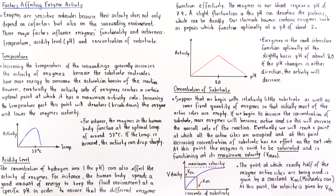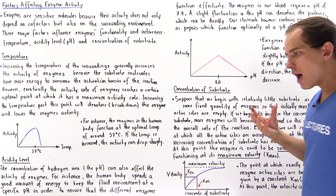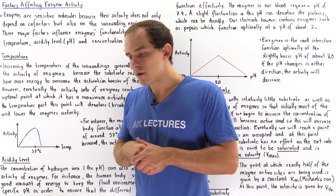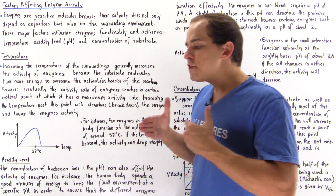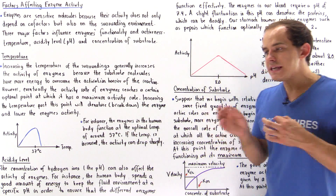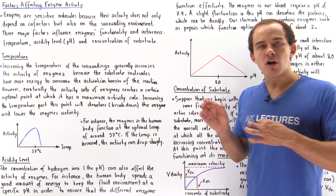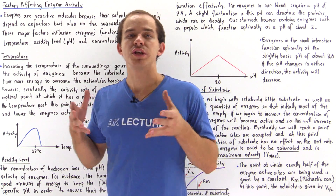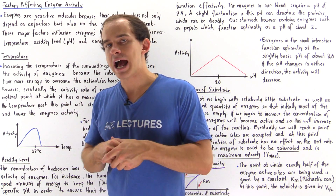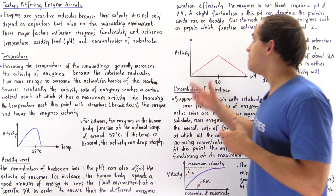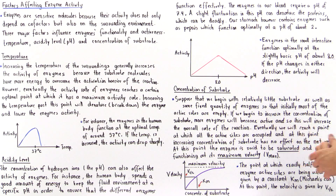The enzymes in our blood, for example, require a pH of about 7.4. If the pH fluctuates even a small amount, the enzymes will basically lose their functionality, and this can be a very deadly scenario.